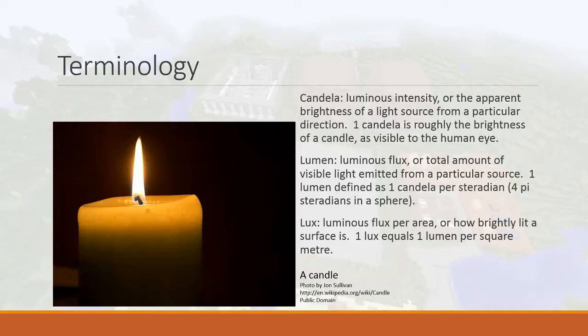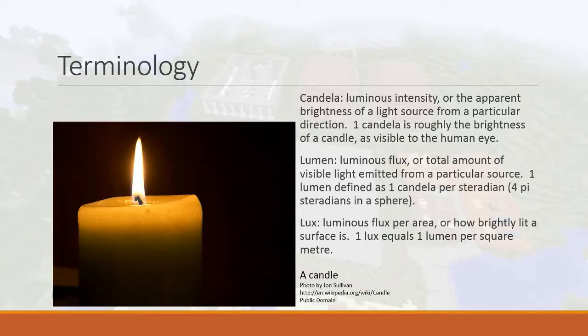The next unit is the lumen, which measures luminous flux — the total amount of visible light emitted from a particular source. One lumen is defined as one candela per steradian, and there are four pi steradians in a sphere. So luminous flux is how much visible light is coming out of a source.